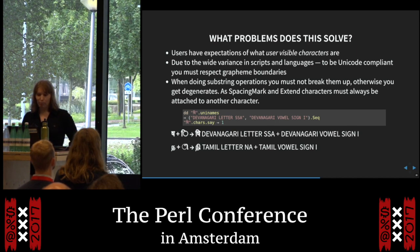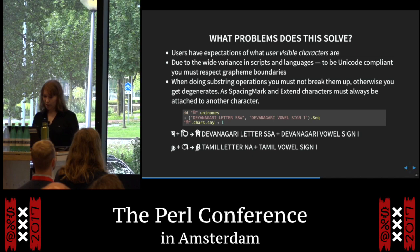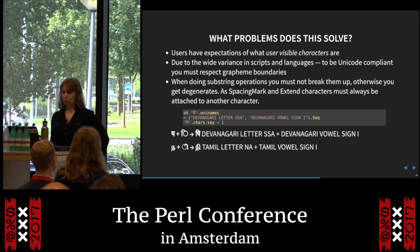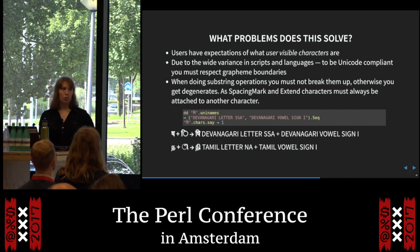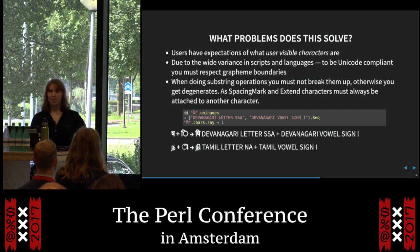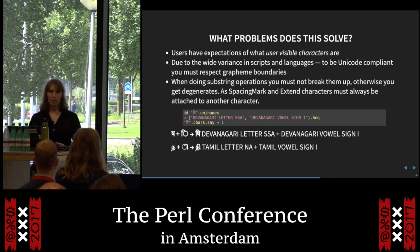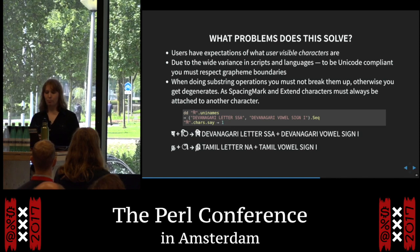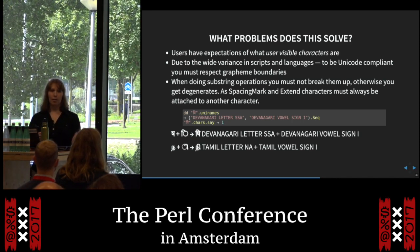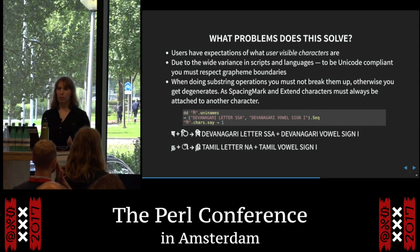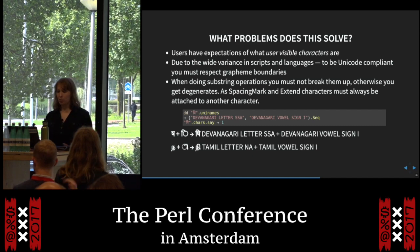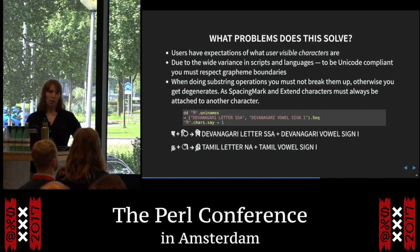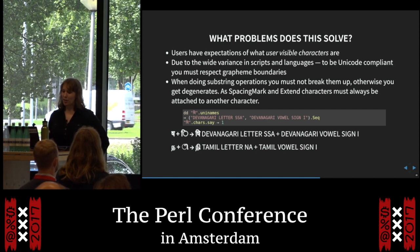Perl 6 has some very useful features like the 'ignore mark' regex adverb. If you have accented forms and just want to match anything with an A in it, you can use the :m adverb and match any character that has that base character. Similarly, the 'ignore case' functionality supports case folding, which allows you to match ligatures like ST, or letters that have multiple forms in other languages, without having to type a character class of four different things.